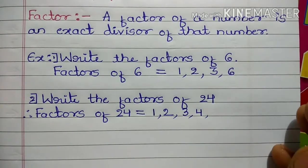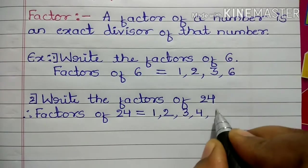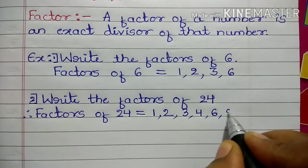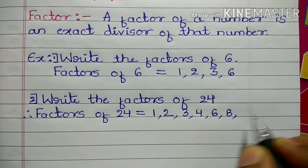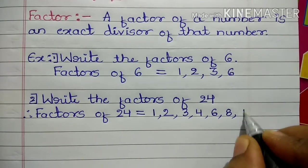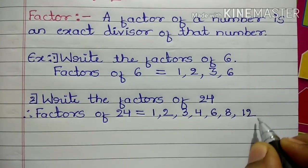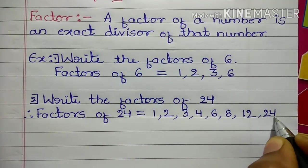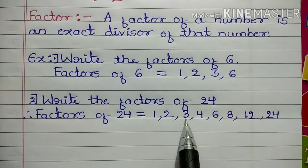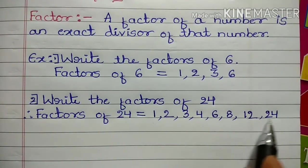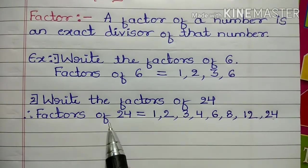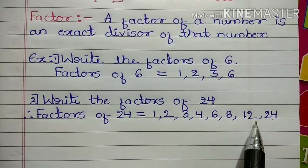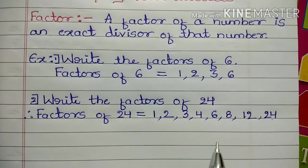In the 5 times table, 24 is not there. Next, 6 times 4 is 24, 8 times 3 is 24, 12 times 2 is 24, and the last one is 24 times 1 is 24. So here, 1, 2, 3, 4, 6, 8, 12, and 24 are called factors of 24. So 24 is divisible by these numbers. This is what we mean by factors.